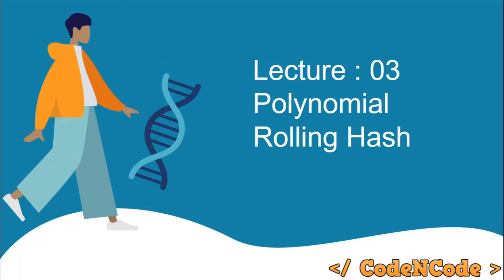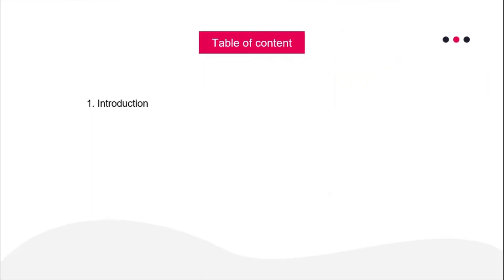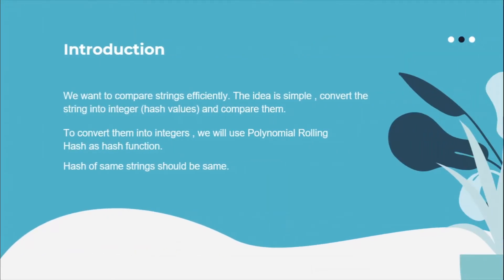Hello guys, this is Code in Code, and this is the third lecture of the string algorithm series. In this lecture, we are going to study about polynomial rolling hashes. So let's get started with the introduction. Our primary goal is to be able to compare two strings of length n for equality efficiently.